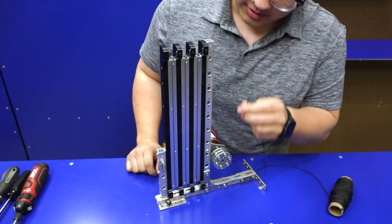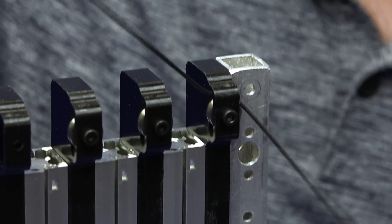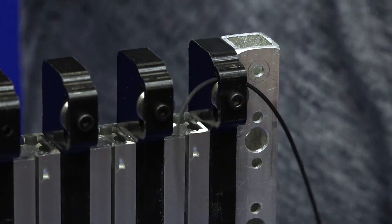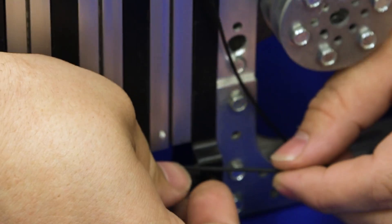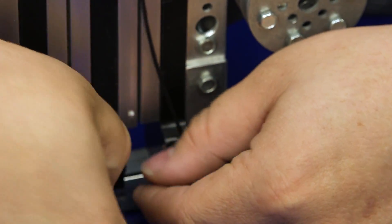First, we're going to take your string and go above this bearing. We're going to weave it through all of the different parts. So it's going to go above this first one and below the second one.